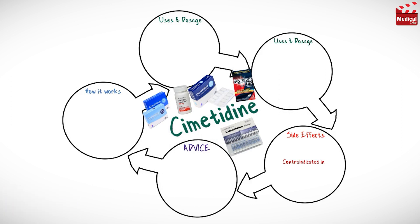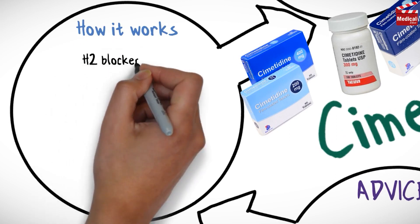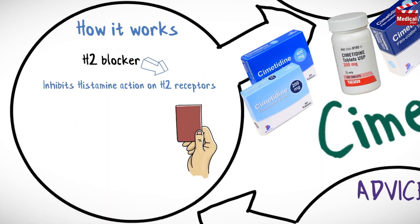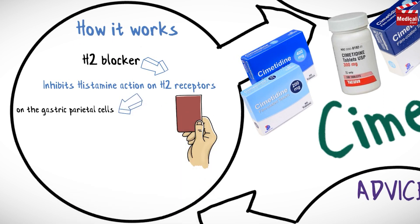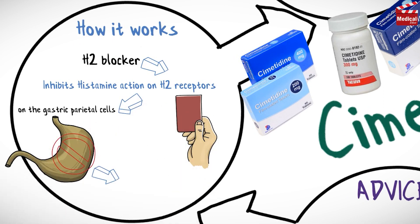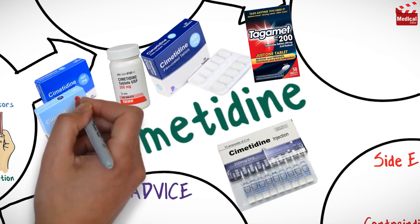Cimetidine belongs to a category of drugs called H2 blockers. It inhibits histamine action on H2 receptors, which are found on the gastric parietal cells, and this action reduces the secretion of gastric acid.